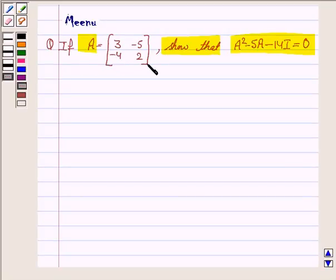It says if A is this 2 by 2 matrix, show that A squared minus 5A minus 14I equals 0. So let's proceed on to the solution.